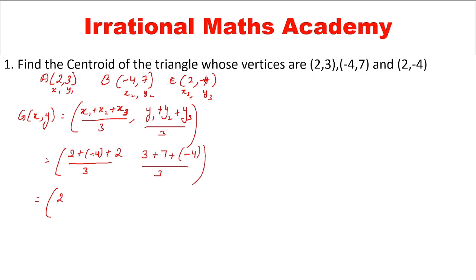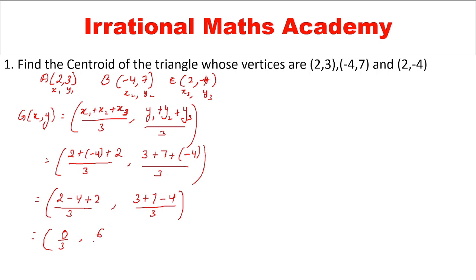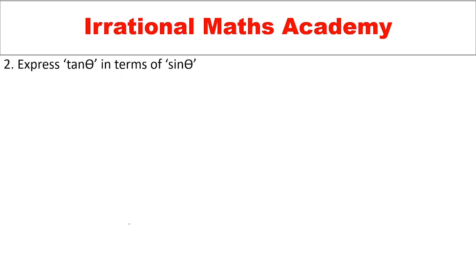So: (2 + (-4) + 2)/3 and (3 + 7 + (-4))/3. Now 2 minus 4 is -2, and -2 plus 2 is 0. Then 3 plus 7 is 10, and 10 minus 4 is 6. So finally 0/3 = 0 and 6/3 = 2. So the centroid of the given vertices is (0, 2).